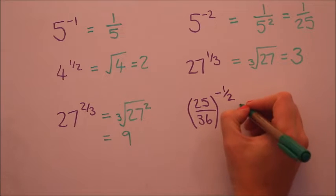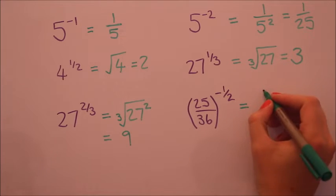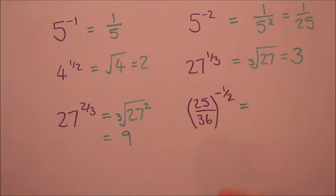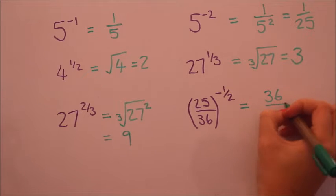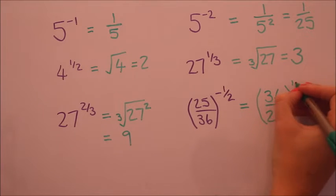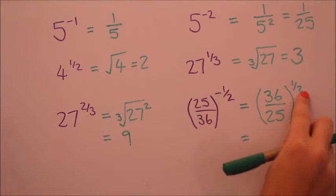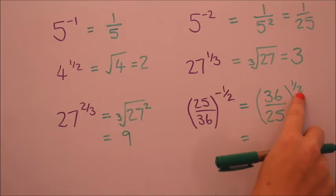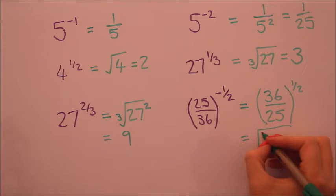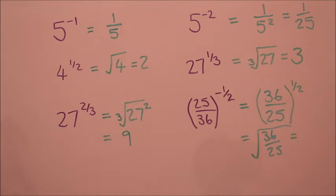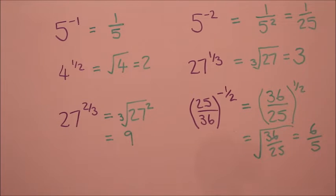Now let's look at the last example that has a negative and a fraction. Now the negative as we know flips everything upside down. And we're left with just the fraction. Now that fraction gives it a square root. So the square root of thirty six is six and that will be five. Okay it's worth practicing a few more of those before we continue.